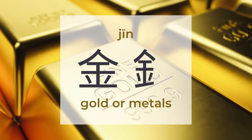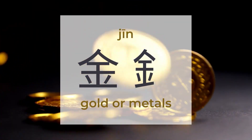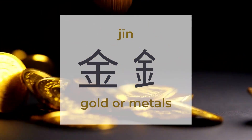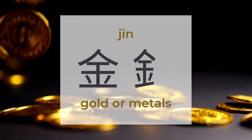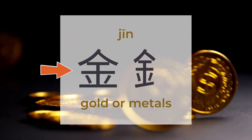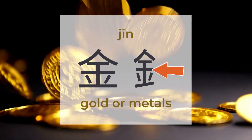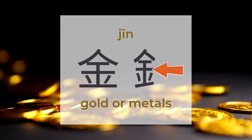金 means gold or metals. There are around 806 characters to be found under 金. 金 is a pictogram, and the full-size 金 transforms into a skinnier form when appearing on the left side of a Chinese character.